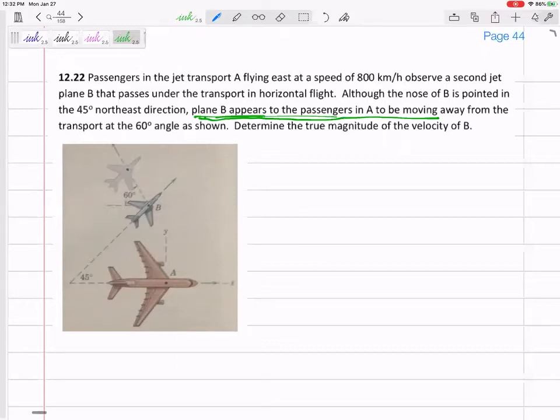So this would be a VB slash A problem. Now that I know it's a relative velocity problem, I would write this equation: VB equals VA plus VB slash A. And I would plug in everything I could, right? I'm given some numbers, some information in this problem.